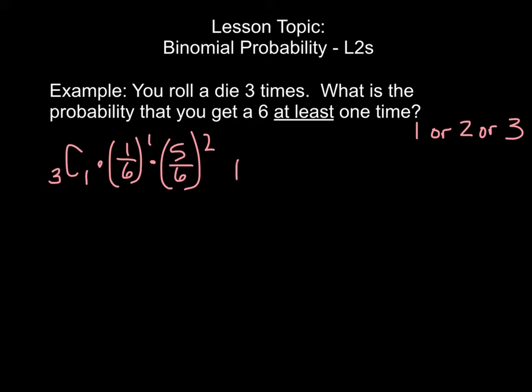Then we need to add the answer to that probability to the probability that we get a 6 two times. So we're going to take this exact same thing and just change a couple of the numbers. We still have three rolls of the die, and we need to know how many different combinations or ways you can get two sixes. We're going to multiply that by the probability of getting a 6, one-sixth, and this time we want two sixes. And then we have to multiply that by the probability of getting something other than 6, which is five-sixths, raised to the first power.